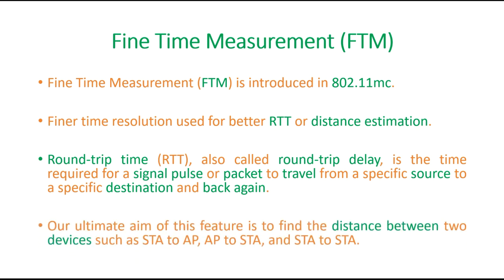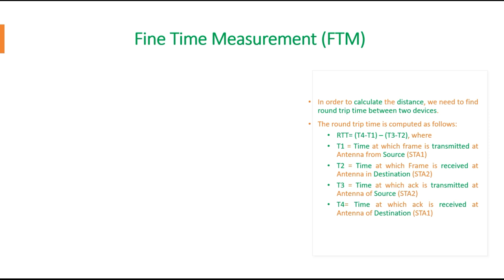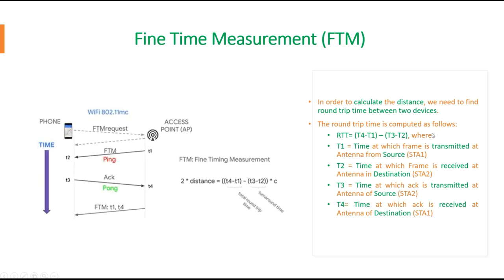Our ultimate aim of this feature is to find the distance between two devices — between a station and AP, AP and station, or station and station. How does it calculate the distance? The round-trip time is computed as: RTT = (T4 − T1) − (T3 − T2).